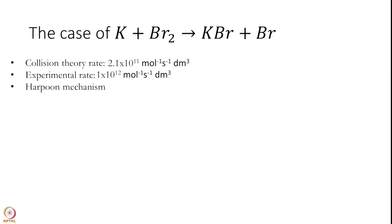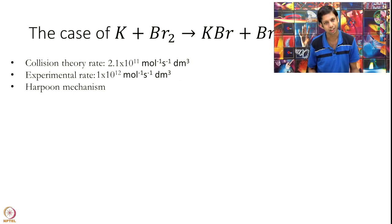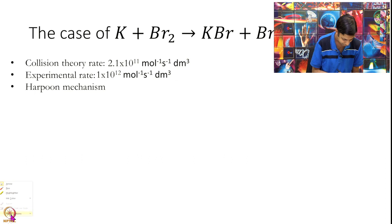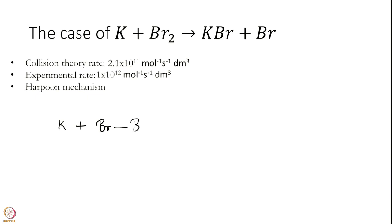Let us finally discuss this example. It's a very interesting case of K plus Br2 going to KBr plus Br. In this case, it's the opposite - collision theory underestimates the correct reaction rate. What happens here is something very interesting. I have K and I have Br2. This reaction happens under what is called the Harpoon mechanism. What actually happens is that when this K and Br2 come somewhat close to each other, an electron actually jumps from K to Br. This first goes to K+ plus Br2-, and this eventually reacts to give KBr plus Br.